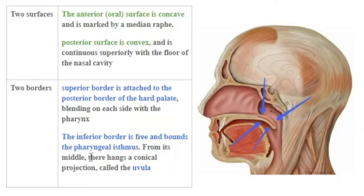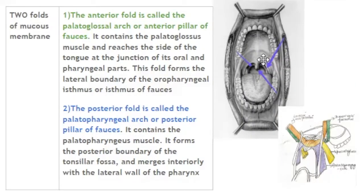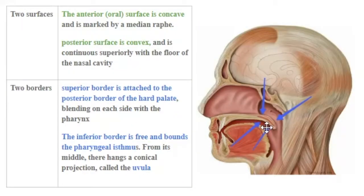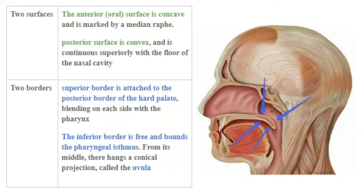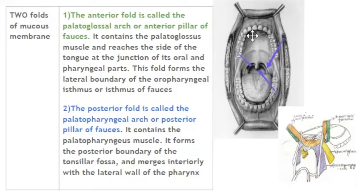From its middle hangs a conical projection called the uvula. So the soft palate has an anterior surface and a posterior surface — the anterior surface being concave while the posterior surface being convex. It has a superior border continuous with the posterior border of the hard palate, and an inferior border which is free, bounds the pharyngeal isthmus, and from the middle of which hangs a conical projection called the uvula.